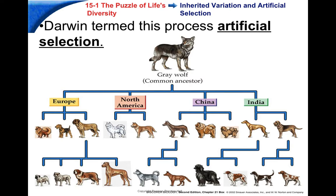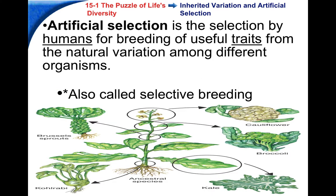For example, every dog breed alive right now is the same species — they all came from a gray wolf about 20,000 years ago, but have been bred to be different shapes, sizes, and have different characteristics. Artificial selection is selection by humans by breeding for specific traits. All those vegetables — cauliflower, broccoli, et cetera — came from a single plant, which humans started breeding for specific parts, giving rise to all those different vegetables.